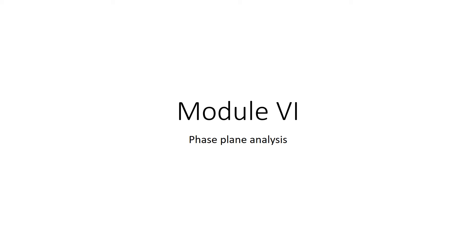We will move on to the last module, which is the sixth module. In this we will see phase plane analysis — how we are going to analyze higher order systems by means of phase planes. We have different methods in phase plane, which is a graphical means of analyzing non-linear systems. We have three different procedures for analyzing and determining the stability of non-linear systems.